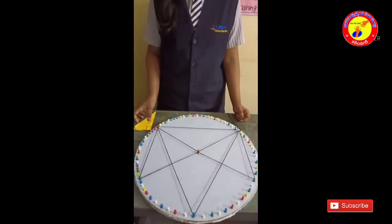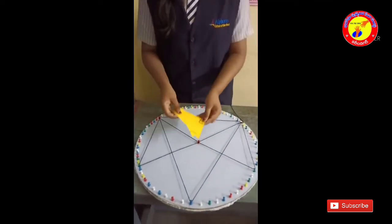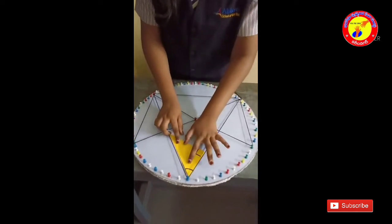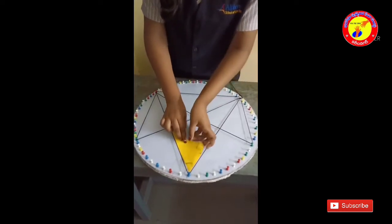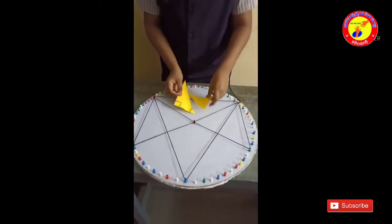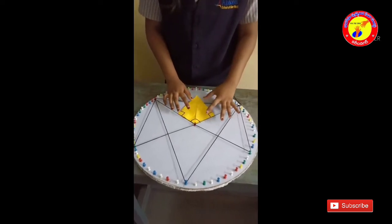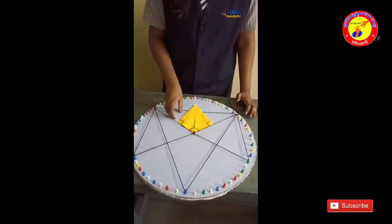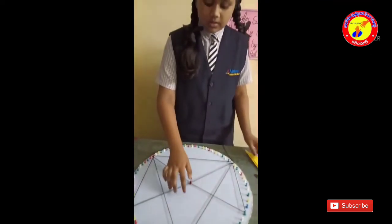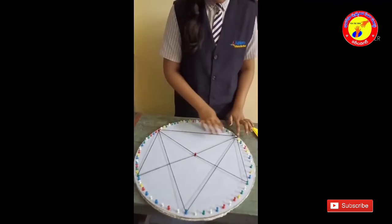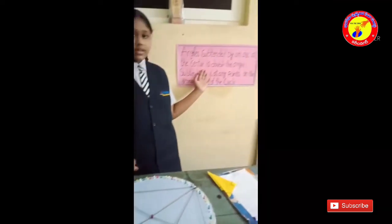We can prove this by checking the angles here. This first angle is equal, and its double is this angle. So this angle doubled is this angle, and it is subtended by an arc. By this we have proved the second theorem.